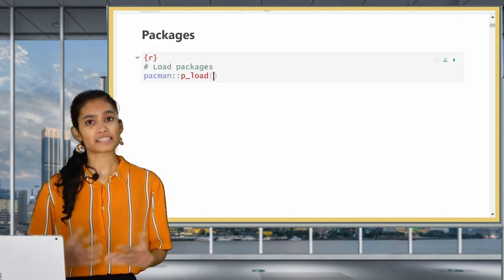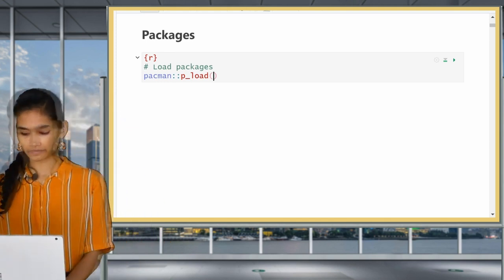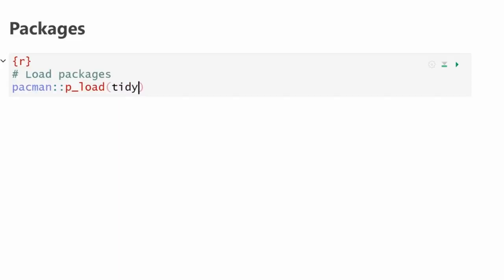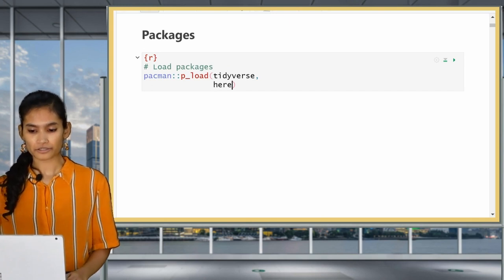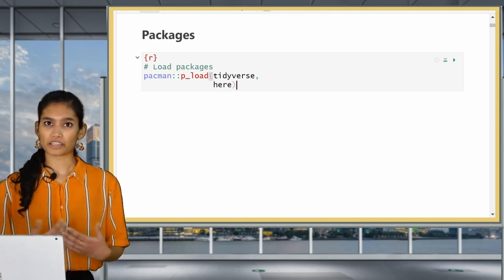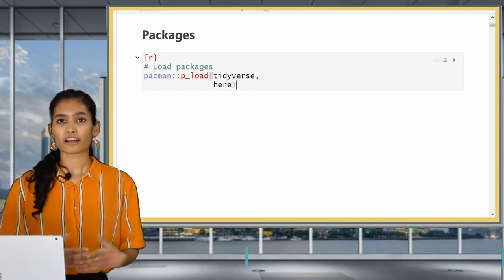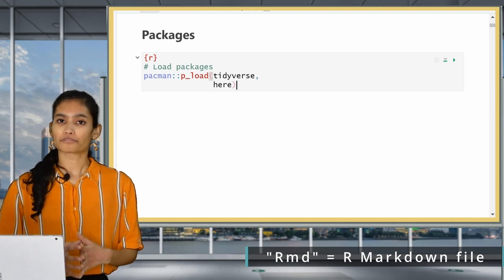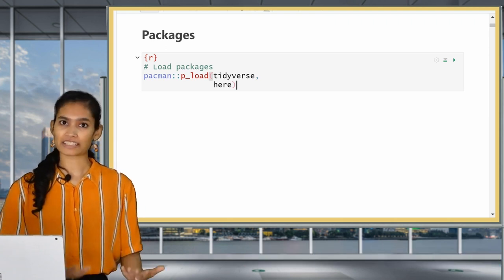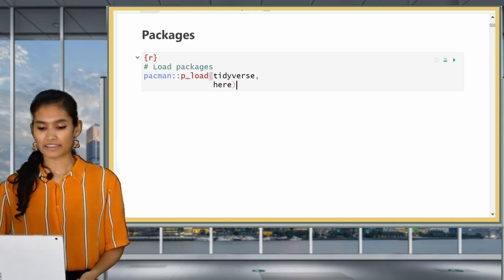The packages we need for this lesson are tidyverse and here. Tidyverse loads in ggplot so we don't need to load it in separately, and the here package helps us more easily reference and load in data and files. This RMD is available and the data is available too from the graph courses, so if you'd like to follow along please download and code along with me in this video.